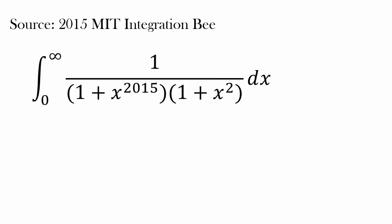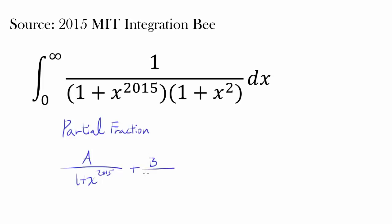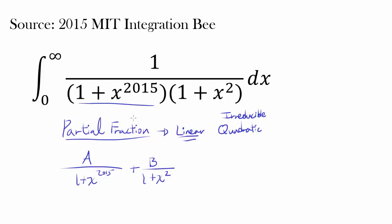So how can we attack this question? Some of you may have an idea of using partial fraction decomposition — dividing this into A over (1 plus x to the 2015) plus B over (1 plus x squared). But that's really not going to work here, because you have to reduce the denominator to linear and irreducible quadratic forms over the reals. That means factoring (1 plus x to the 2015) many many times, which would take a very long time and is not elegant. So let's not try partial fraction decomposition.